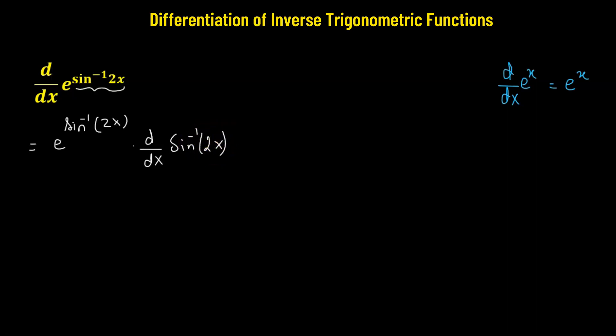Now, we have the derivative of the inverse sine function, so that's simply 1 divided by square root of 1 minus x squared.